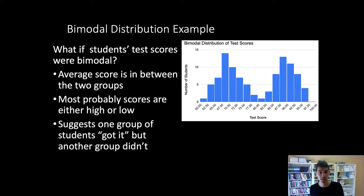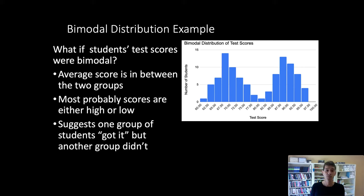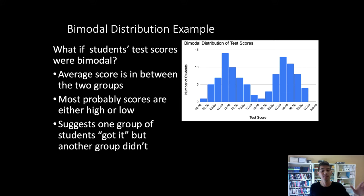Imagine a scenario where in lecture I give answers to some quiz questions. Students who attended get those answers; students who didn't attend miss them. That could create two groups resulting in a bimodal distribution of test scores — one normal distribution where the most typical score is in the 90s, and another where the most typical score is in the high 60s around a D. The hidden predictor variable would be who came to class. The average or median for the overall distribution would fall somewhere around a B, but that average doesn't represent many students — it just splits the difference between the two groups.